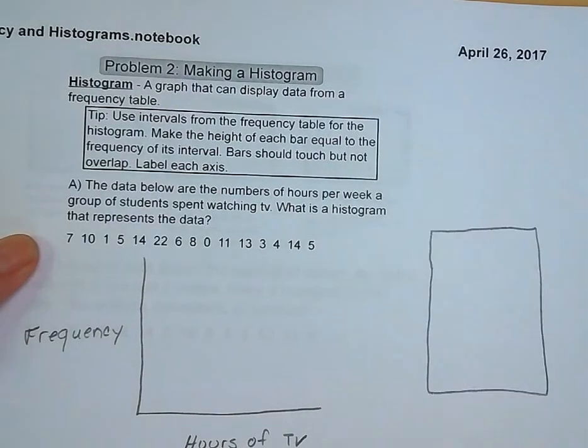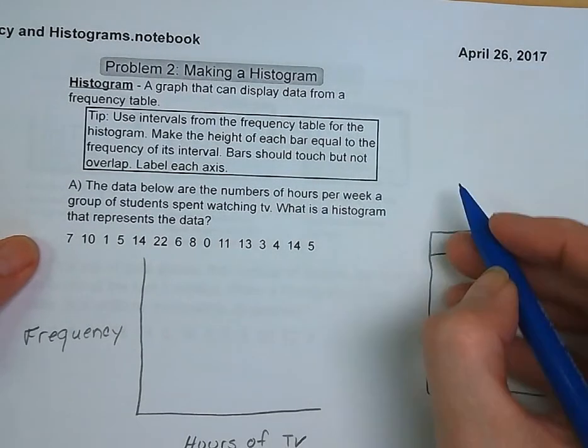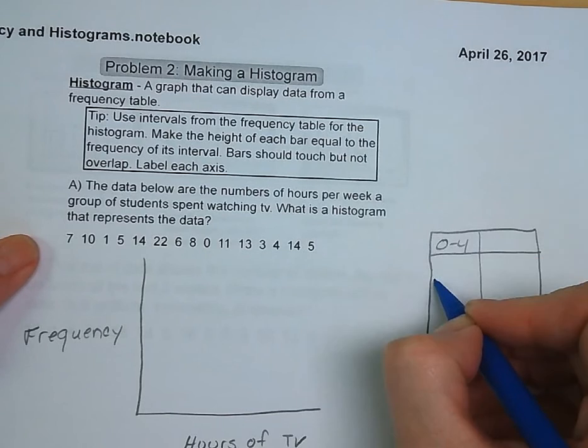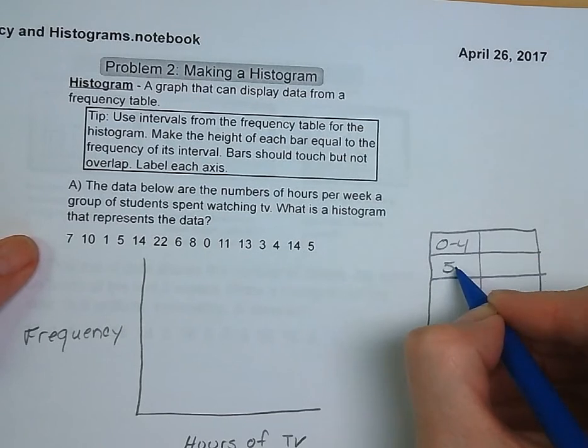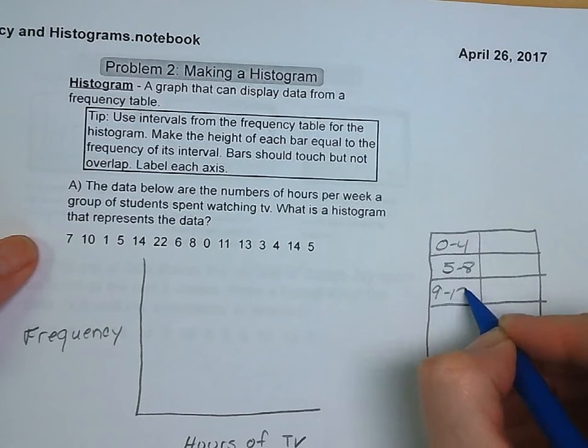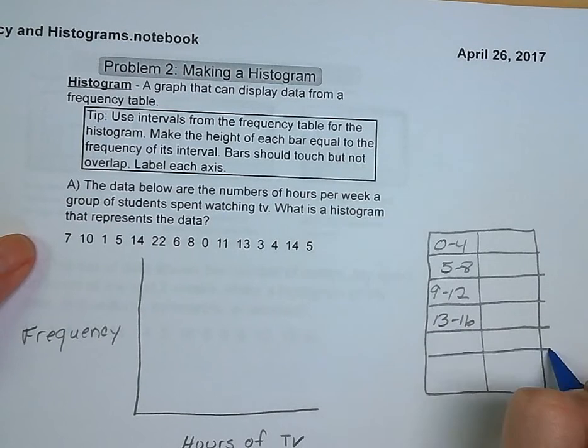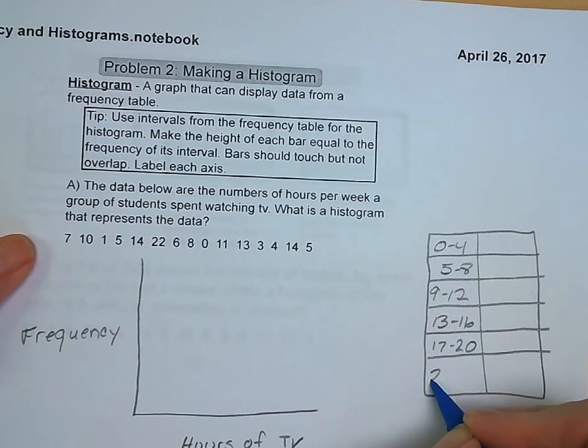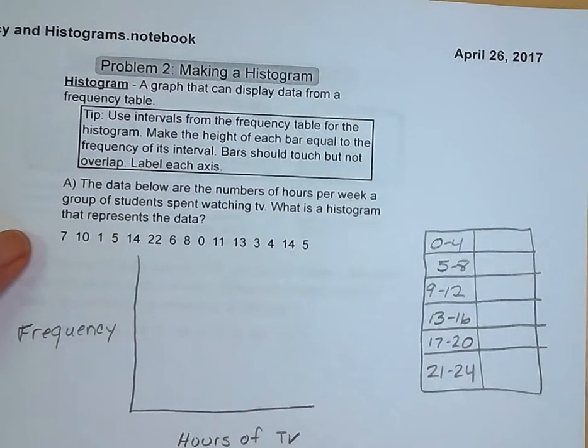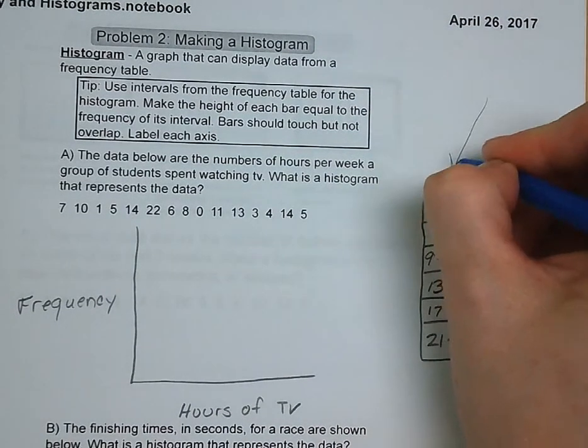You need to have all of the intervals covered, no gaps. So we're going to do hours of TV and number of students. We need to break up into our frequency table. So we're just going to go 0 to 4, 5 to 8, 9 to 12, 13 to 16, 17 to 20, and 21 to 24. Mr. Bolin, how did you decide on those numbers? I just decided on them.